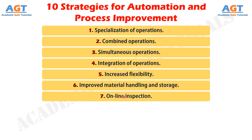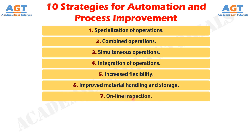Strategy No. 7: Online Inspection. Inspection for quality of work is traditionally performed after the process is completed, meaning that any poor quality product has already been produced by the time it is inspected. Incorporating inspection into the manufacturing process permits corrections to the process as the product is being made, reducing scrap and bringing overall quality closer to the nominal specifications intended by the designer.